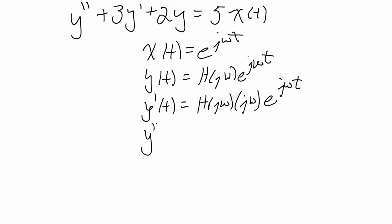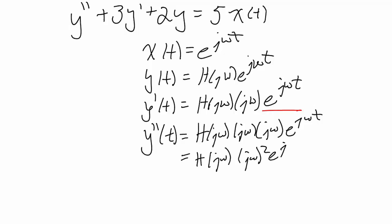For our second derivative, we repeat the process. h of j omega is a constant. j omega is a constant. And now, for our j omega t, there's another j omega and e to the j omega t. We usually write this, h of j omega, j omega squared, e to the j omega t.